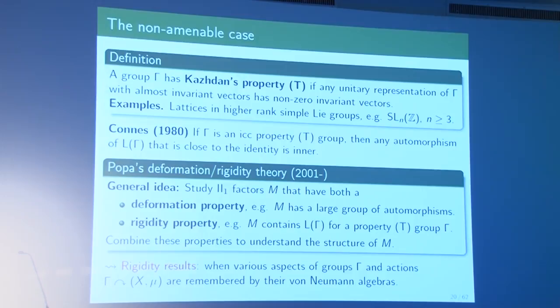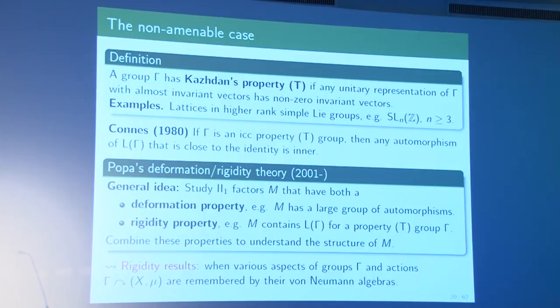Rigidity results are instances where one can recover aspects of groups and actions from the von Neumann algebras — the opposite of the amenable case where nothing is remembered. I'll present results showing that sometimes it is possible to recover the group, the action, partially or entirely, from the von Neumann algebra. For the rest of the talk, I will look separately at von Neumann algebras of actions and those of groups, starting with algebras of actions.